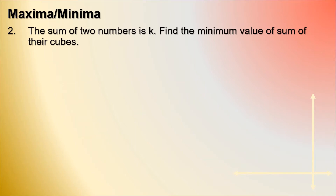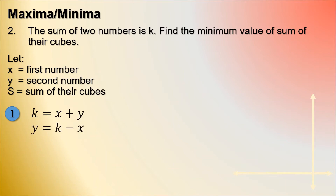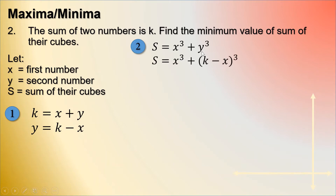The second example of maxima minima: the sum of two numbers is k; find the minimum value of the sum of their cubes. Let x equal the first number, y the second number, and s the sum of their cubes. From the first statement, x plus y equals k, so y equals k minus x. The second equation is x cubed plus y cubed equals s. Substituting the value of y, we get x cubed plus the quantity k minus x, cubed.